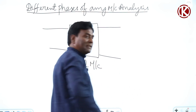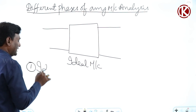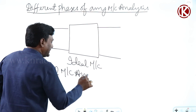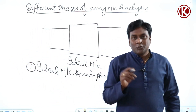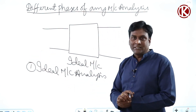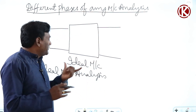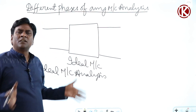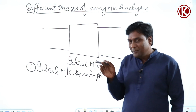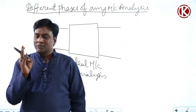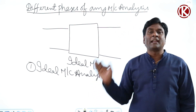So the first phase is ideal machine analysis. An ideal machine will never exist in practice. A combination of ideal and practical aspects together forms the practical machine. But we consider the ideal machine first to understand the machine as a machine without disturbances like core or copper losses. The key note: in ideal machine analysis, saying losses are 'neglected' is wrong — they are 'not considered for the time being' because they will be addressed later.